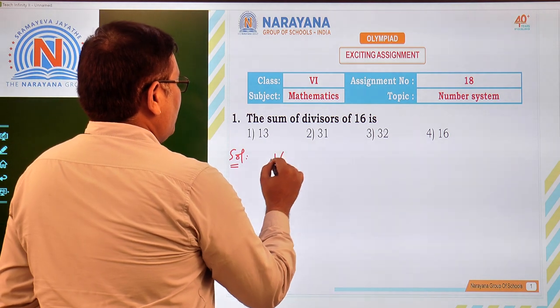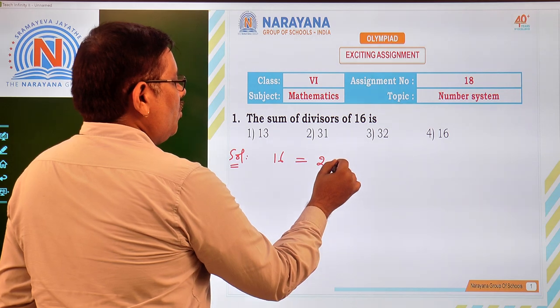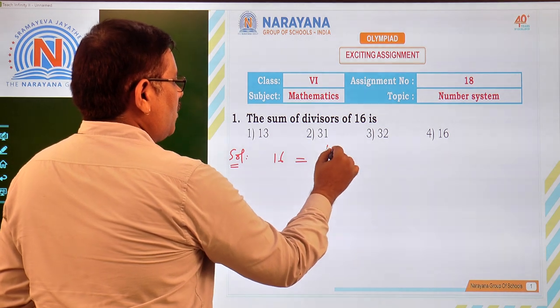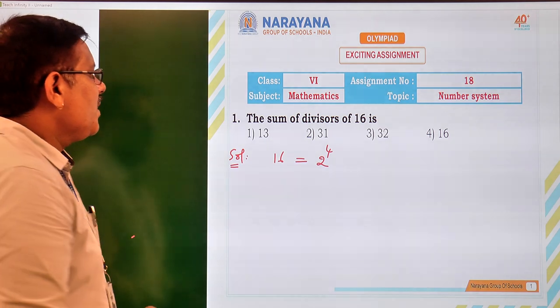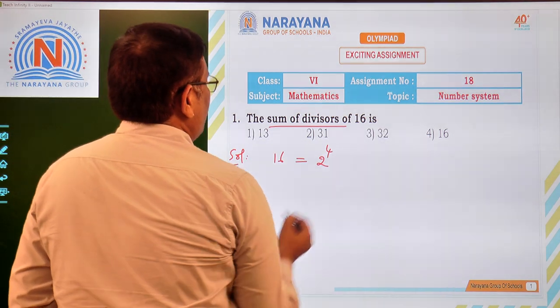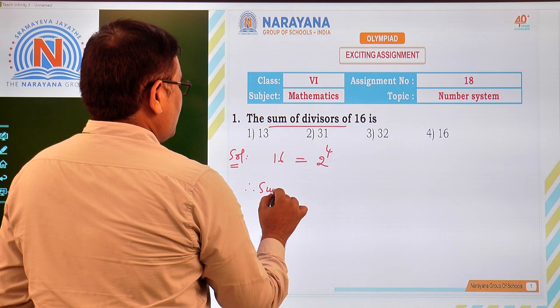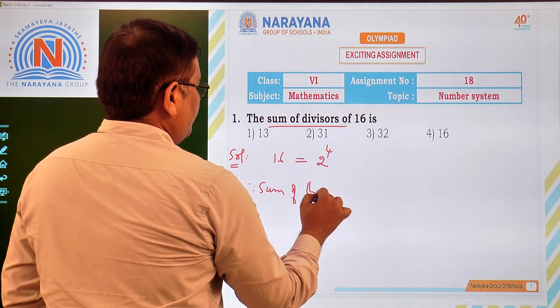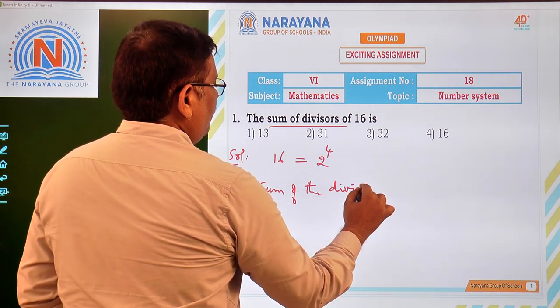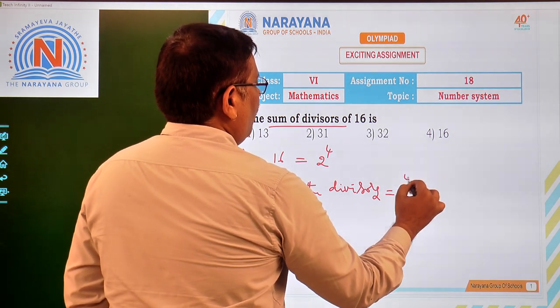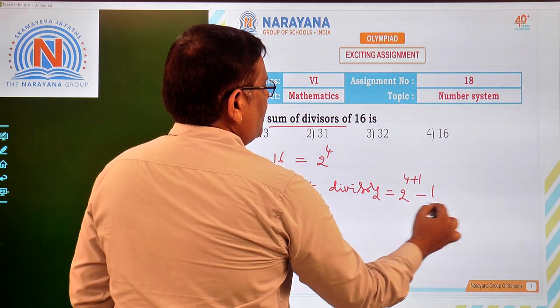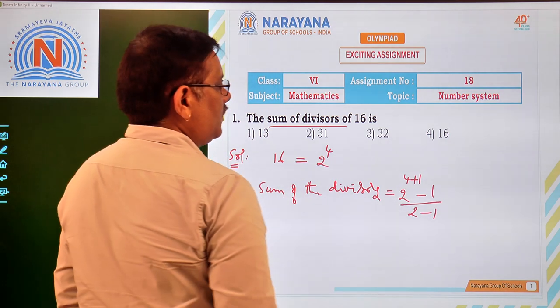16 if you take, that can be written as 2 into 2 into 2 into 2. That is nothing but 2 to the power of 4. 2 power 4 is the standard form of 16. Now, sum of the divisors he is asking. Therefore, sum of the divisors is given by 2 to the power of 4 plus 1 minus 1 by 2 minus 1.